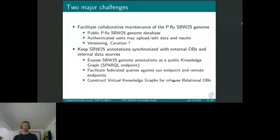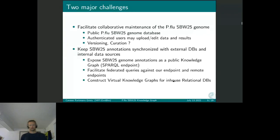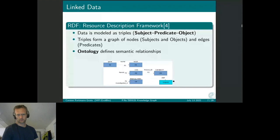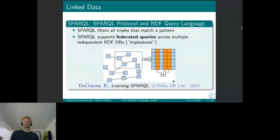To this end, we additionally created a knowledge graph, or an RDF document, which is basically a translation of the annotation document to RDF, served through a SPARQL endpoint. Because SPARQL endpoints facilitate federated queries against other endpoints, we can reach out to both internal and external data sources accessible through SPARQL endpoints. For in-house relational databases, we have to construct so-called virtual knowledge graphs, which are mappings from relational databases to RDF systems. RDF is the Resource Description Framework, where data is modeled as triples, triples form a graph, ontology defines semantic relationships, and SPARQL is the query language for such data structures.